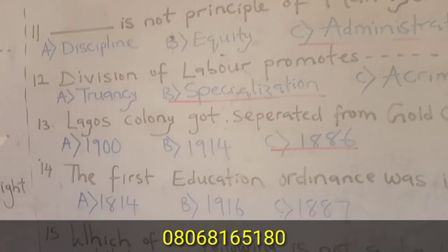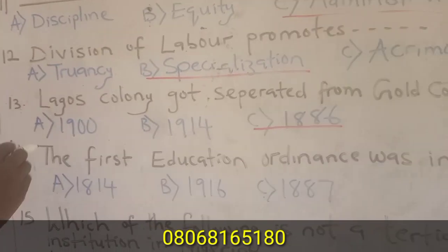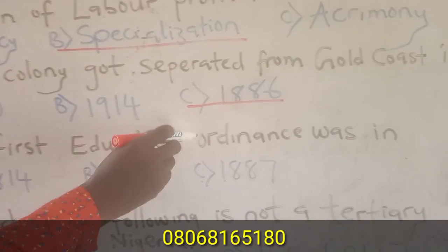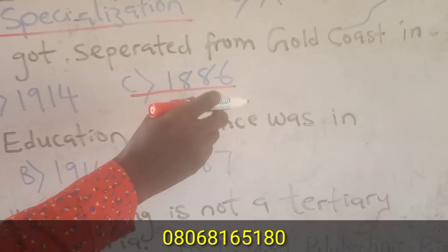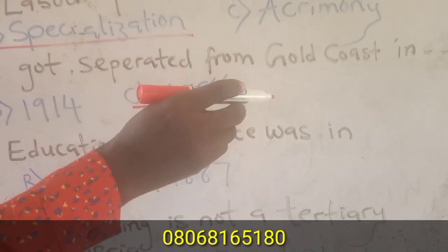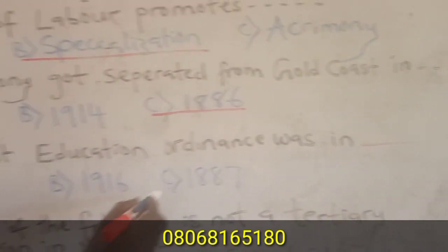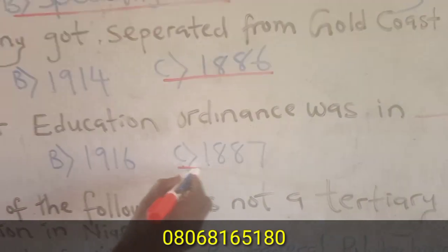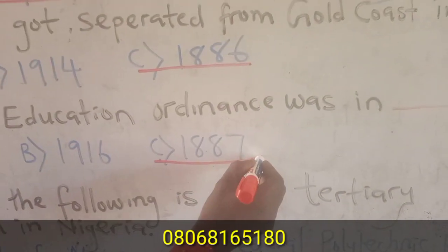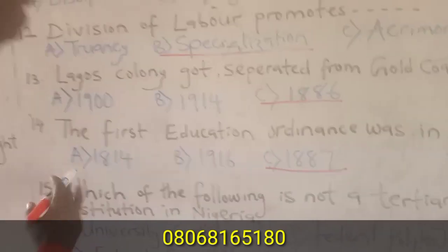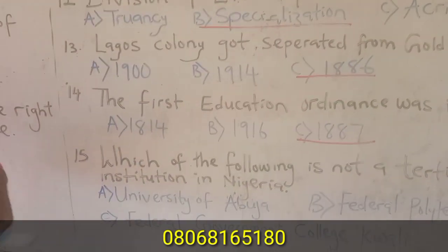Question fourteen: The first educational ordinance was passed in the year 1887.